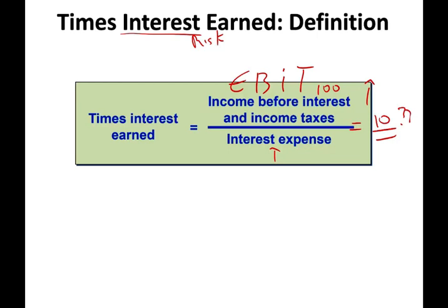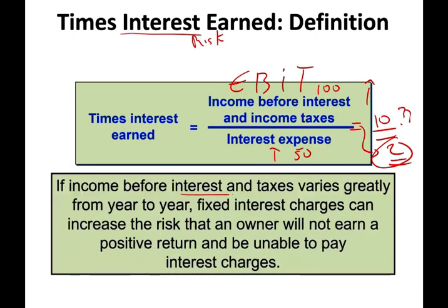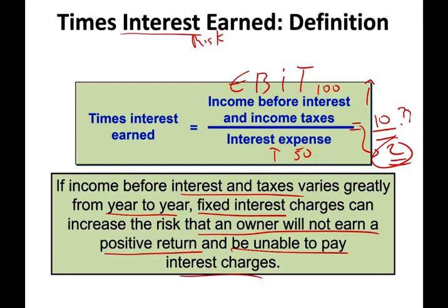But if your interest is $50, the answer is 2 — meaning from your earnings you can only cover your interest expense twice. This ratio is extremely important because income before interest and taxes varies greatly from year to year, while your interest expense does not vary. If you have a loan and are paying interest, your interest does not change — your sales and profit might vary, but your interest is fixed.